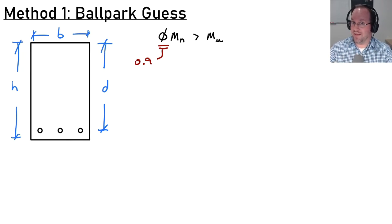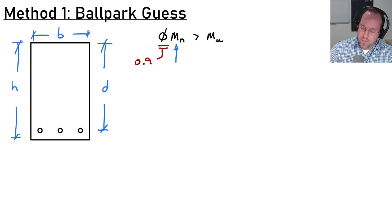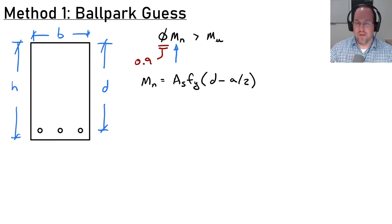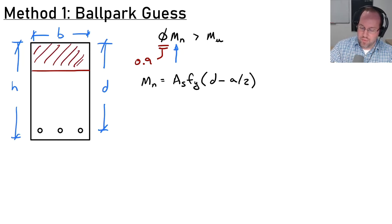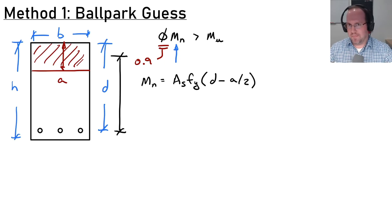The concrete code requires a tension-controlled section for a beam with low axial force, so it makes sense to assume 0.9 even before we know more. Next we need to find moment capacity. Mn equals the tension force — area of steel times yield stress — multiplied by the moment arm between tension and compression forces, which is d minus a over 2, where a is the depth of my compression block. So the moment arm goes from the center of the compression block down to the steel.